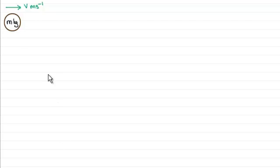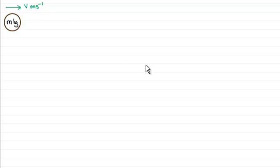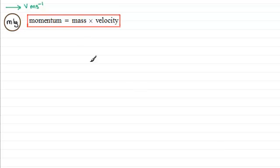Suppose we have a particle of mass m kilograms moving with a speed of v meters per second, say to the right. Then we have a quantity called momentum. Momentum is defined as the mass multiplied by the velocity.